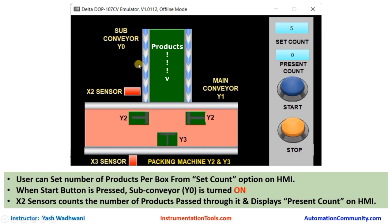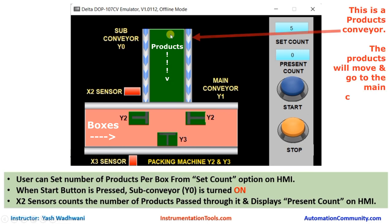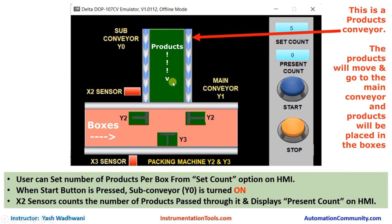I have created one HMI screen with a control panel. When the user presses the start button, the sub conveyor Y0 will start moving. Products will come from this conveyor, and from the control panel you can set the number of products you want to pack in one box.